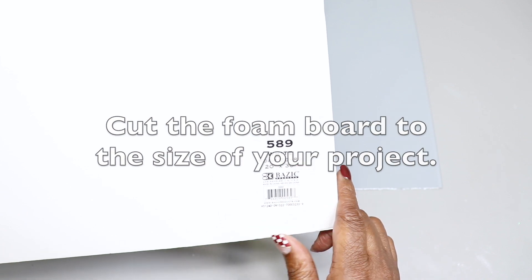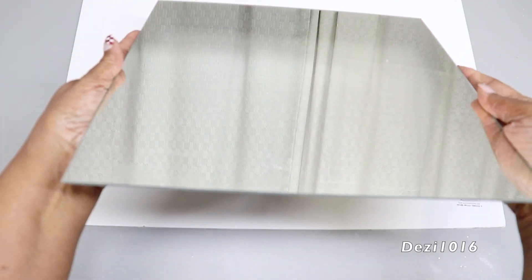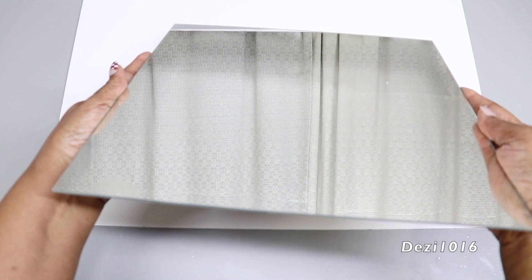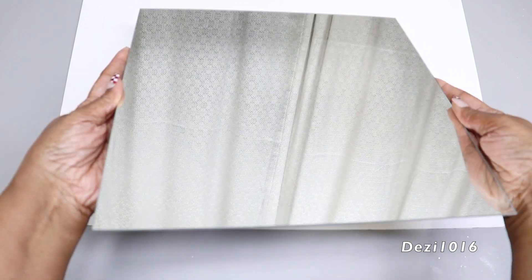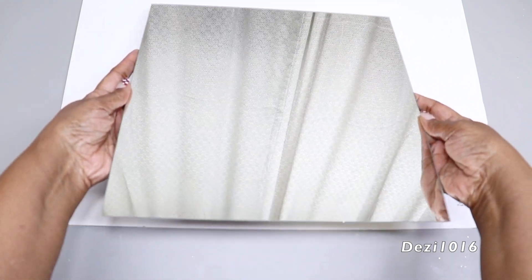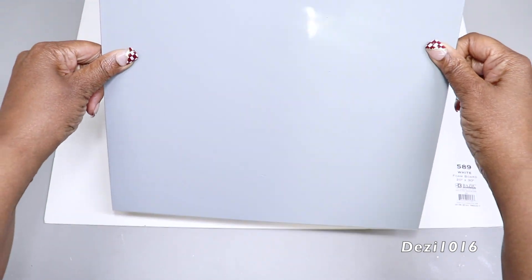So I'm going to start with this white foam board. Taking an 11 inch squared mirror, I'm going to place it on top of the foam board and trace the shape onto it.